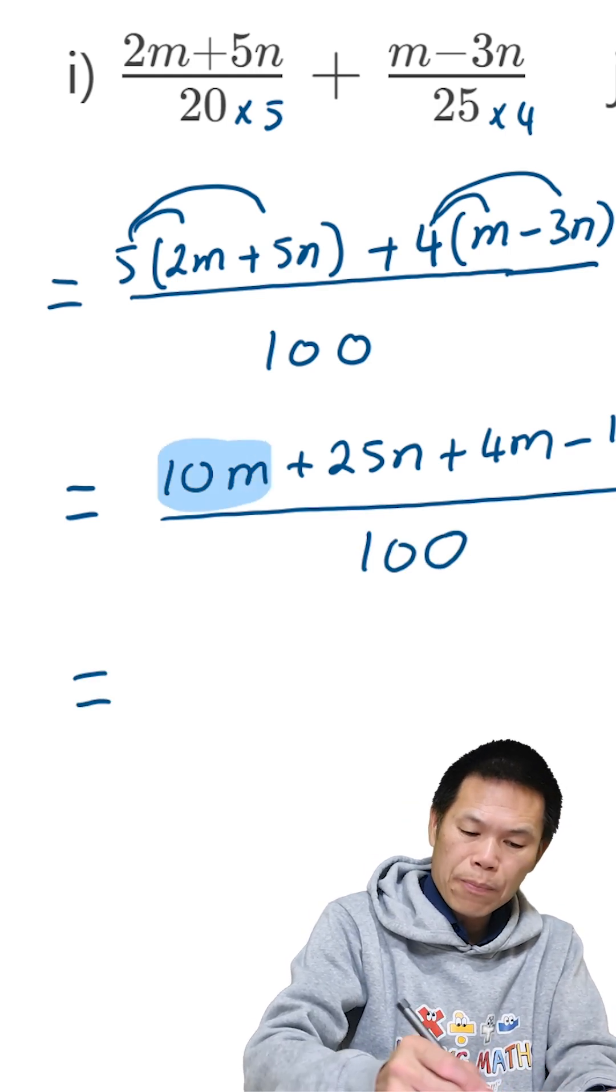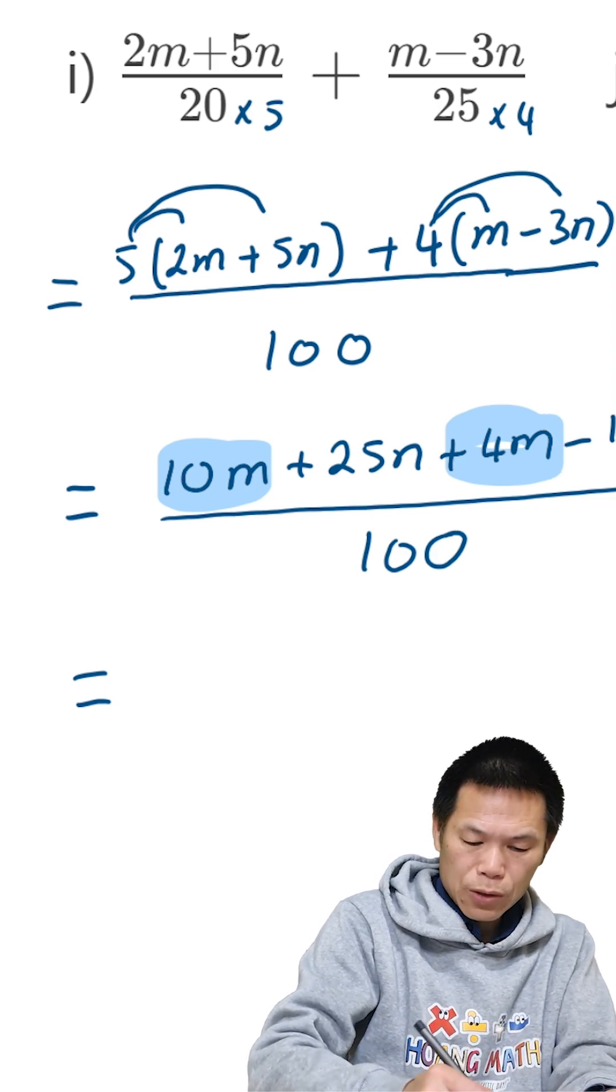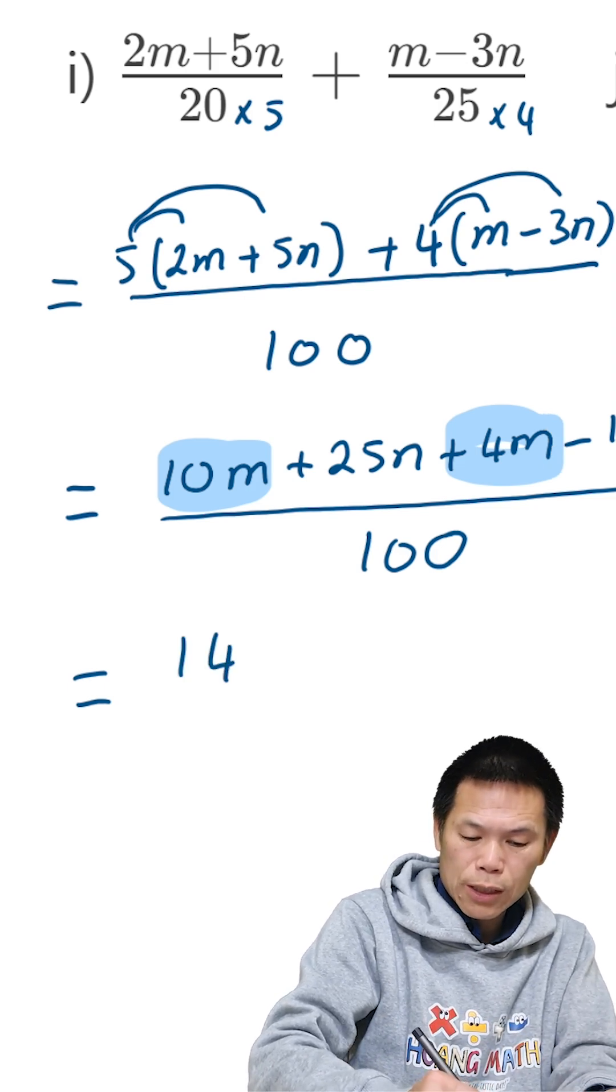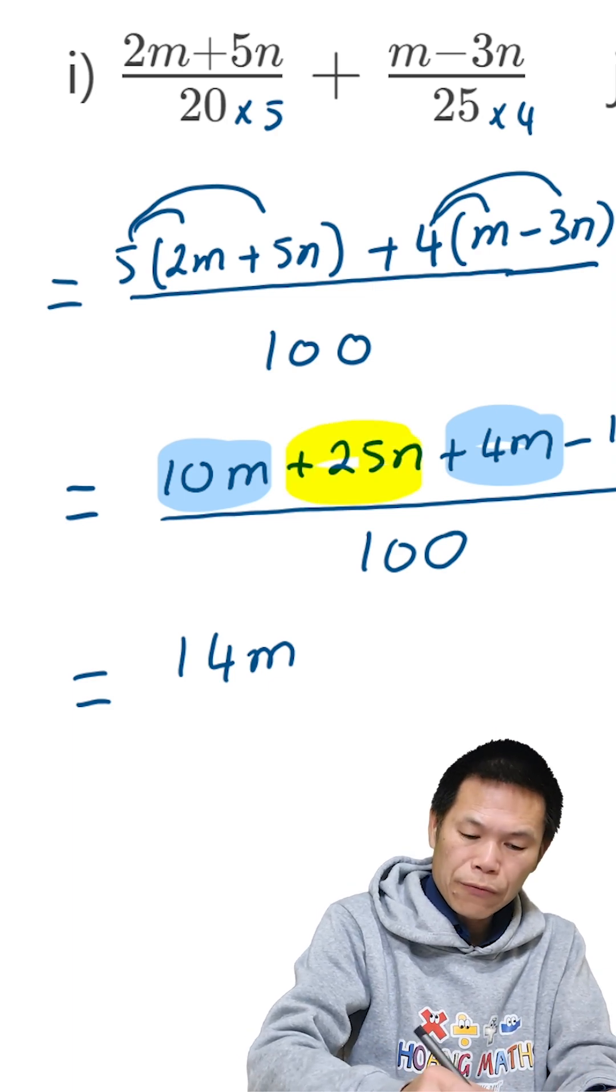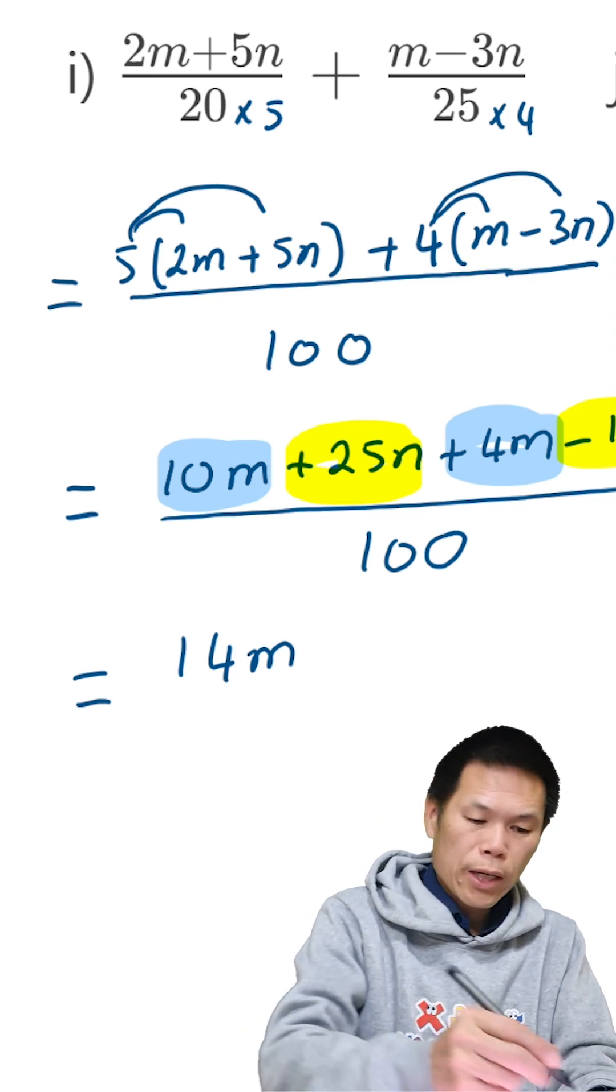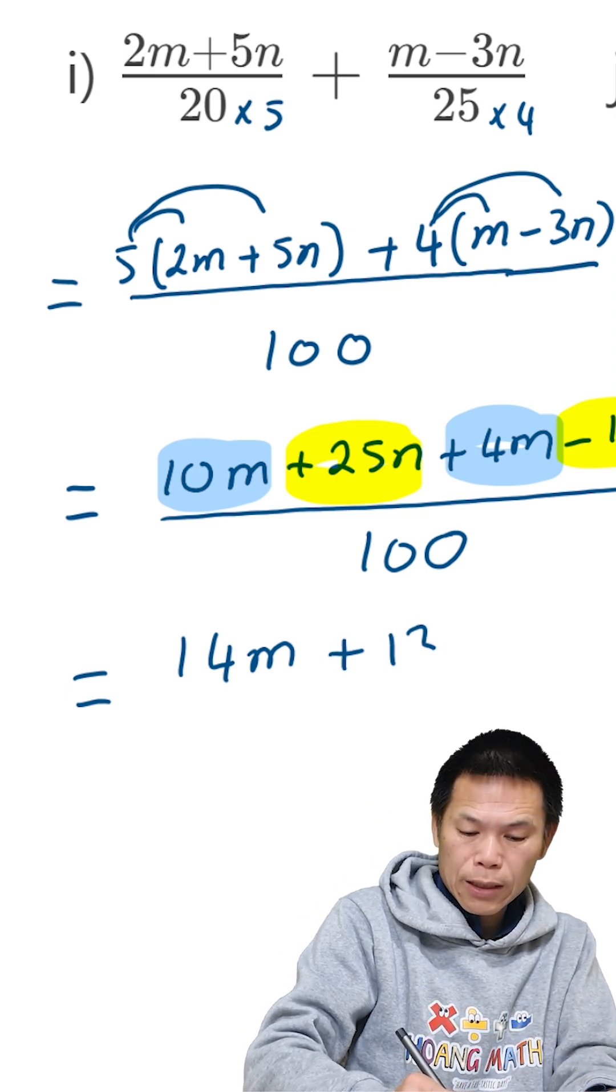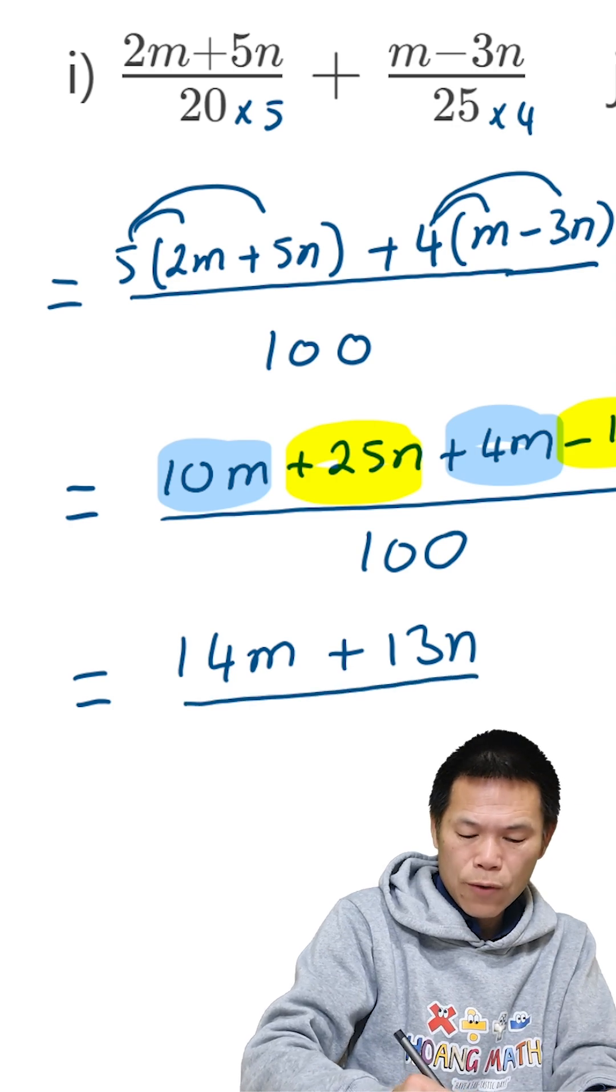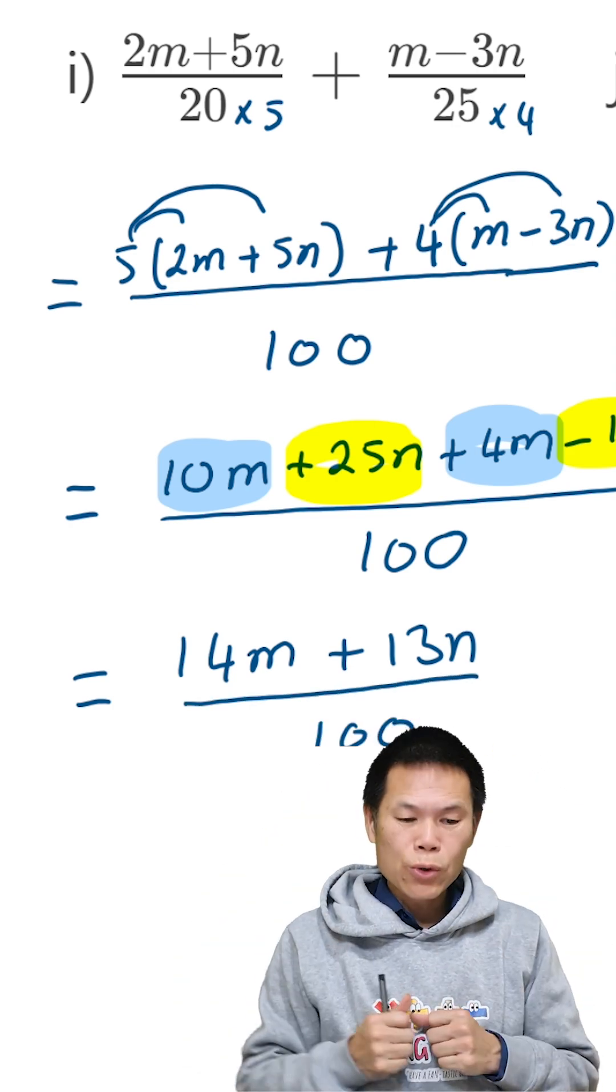...we collect the like terms: 10m plus 4m gives me 14m. Then we have 25n minus 12n, so 25 minus 12 is 13, which means the answer is 14m plus 13n over 100.